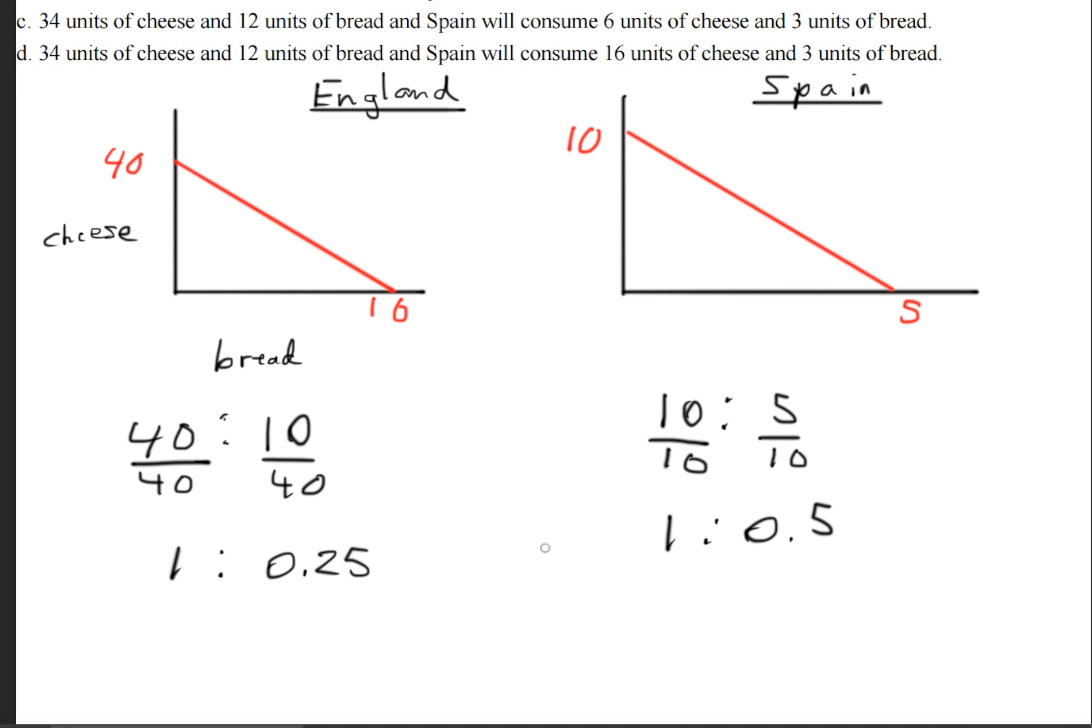So we can see that 0.5 is greater than 0.2, and this value belongs to Spain. So Spain has the comparative advantage for producing bread.